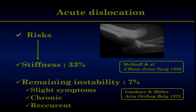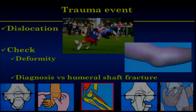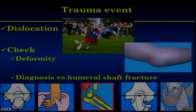When you get a dislocation on the field, check the deformity. The first thing as a team physician is to distinguish dislocation from a humeral shaft fracture. You use the Neton triangle — the alignment of the different bony landmarks. When the alignment is intact in the triangle in flexion or the line in extension, that means you have a shaft fracture and not a dislocation, because this triangle is modified when you have a dislocation.